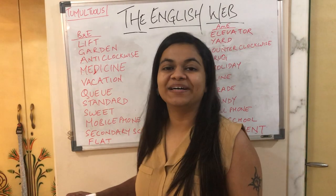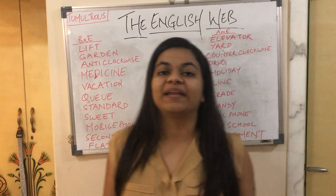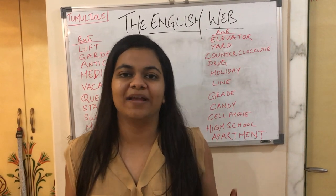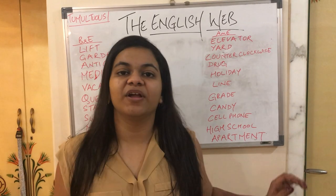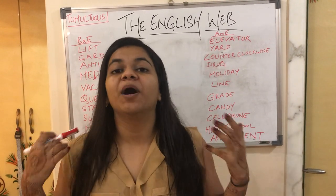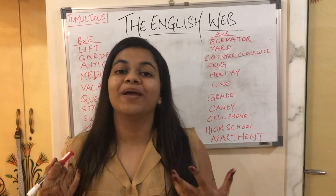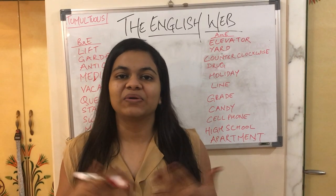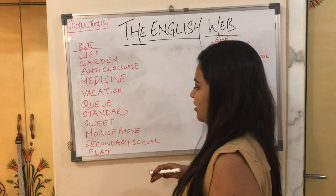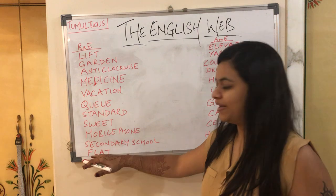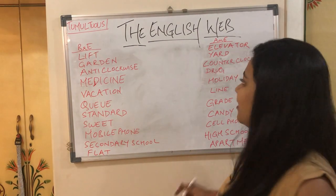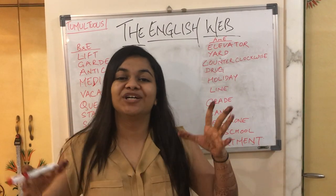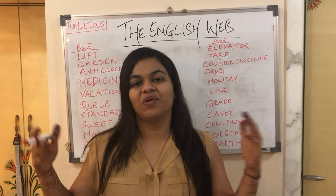The last word is 'flat.' For example: 'I live in a two-bedroom hall kitchen flat.' In the US, people refer to flats as 'apartments' — for example: 'I live in a four-bedroom hall kitchen apartment.' You simply replace the word 'flat' with 'apartment.'